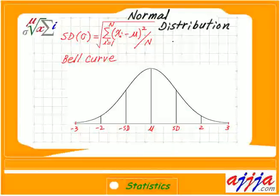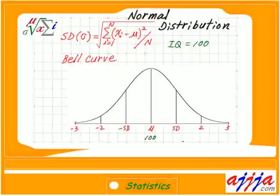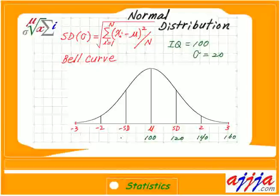One more example I want to talk about: people's IQ — intelligence quotient, how smart people are. The average IQ is 100. So the mean value is 100. Let's say the standard deviation, sigma, equals 20. That means you add one SD — which is 20 — so 120. What about the next one? 140, 160, and so on. On the other side: 80, 60, 40.